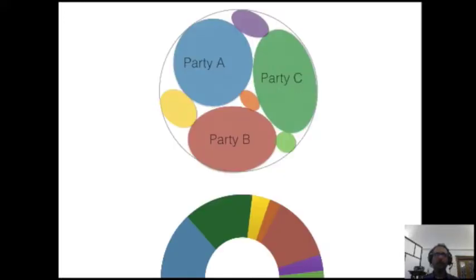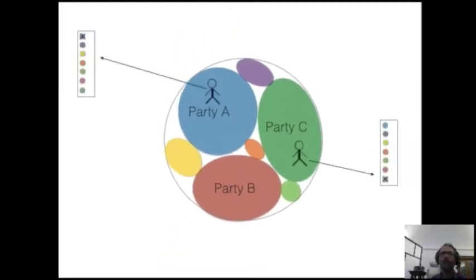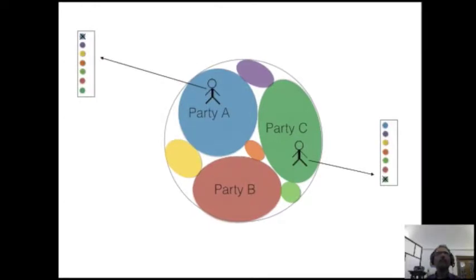This is a classical proportional system. There are different parties, in this case three major parties and several minor parties to share out the electorate above in the figure and the parliament in a proportional way below in the figure. If we look at a person inside the blue circle, it will vote for the blue party. Someone inside the green circle will vote for the green party. So far so good.